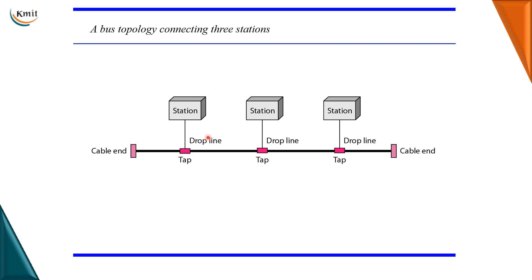A drop line is a connection from the device to the cable. A tap is a connection which punctures the sheathing of the wire or cable to make contact to the metallic core of the cable. As a signal travels from one station to another, it produces heat and the cable gets degraded. So the distance between each tap should be sufficient — if there is less distance between the taps, there will be more heat and the cable may break.